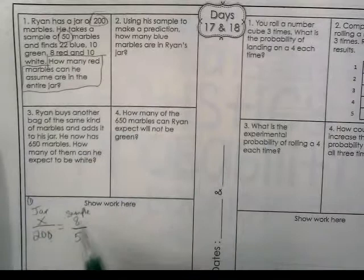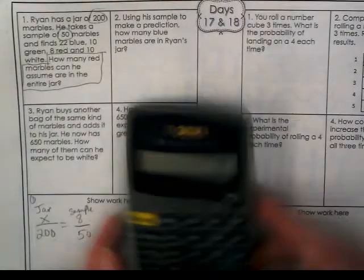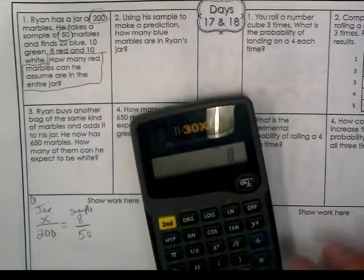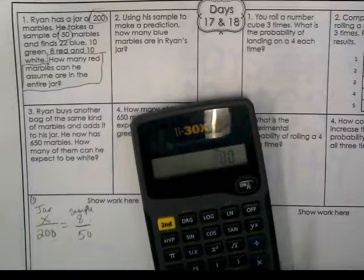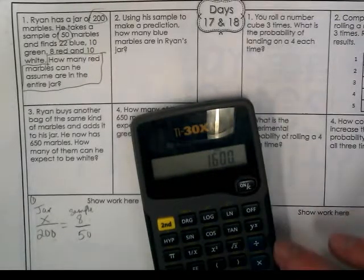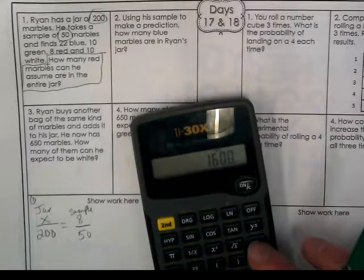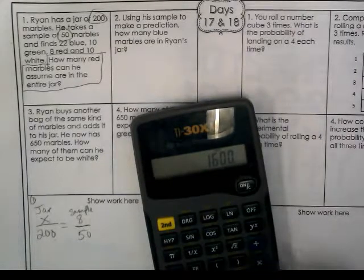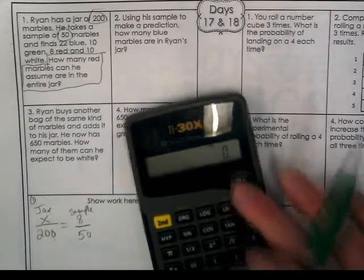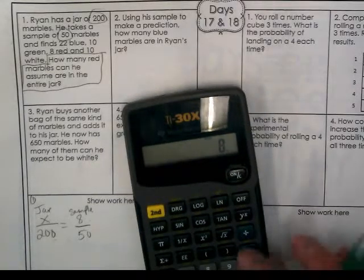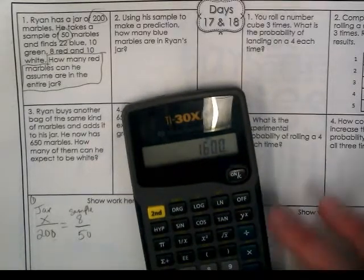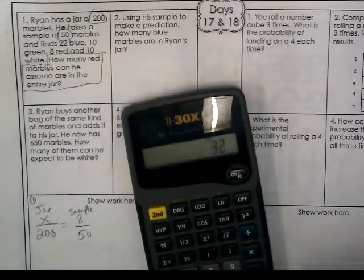So if I do 8 times 200, that would be the cross multiplying. And if I divide by 50, and if I could calculate right, 8 times 200 divided by 50, I'm getting 32.